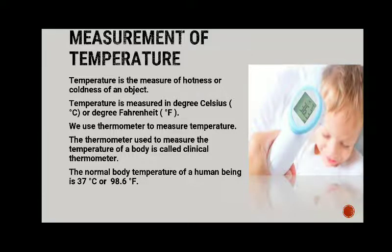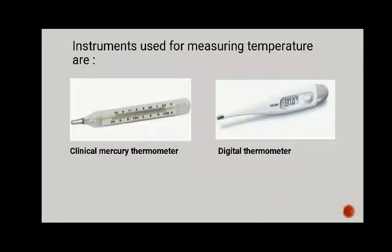The normal body temperature of a human being is 37 degree Celsius or 98.6 degree Fahrenheit. Instruments used for measuring temperature are the clinical mercury thermometer and the digital thermometer.